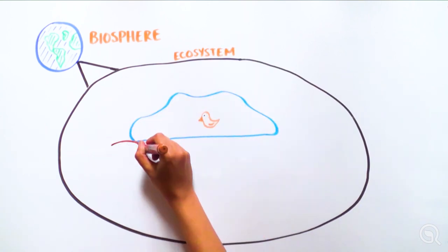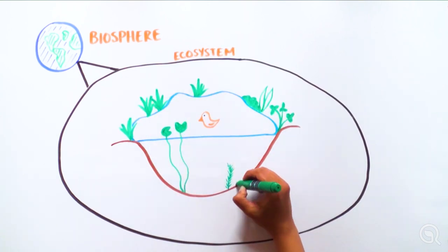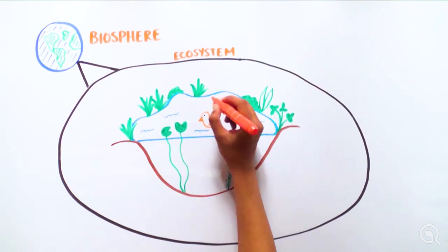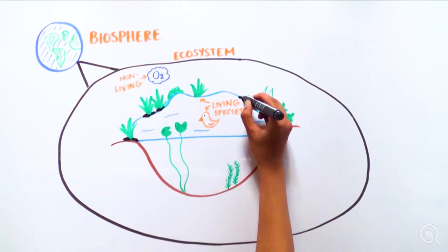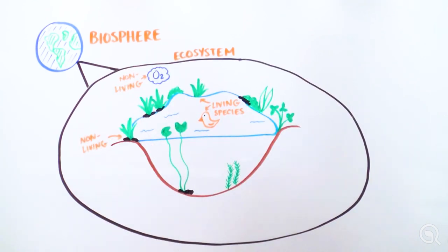Next is an ecosystem, which are interacting systems of living species, like animals and plants, and non-living factors, such as oxygen and rocks. An example of an ecosystem is a freshwater lake.